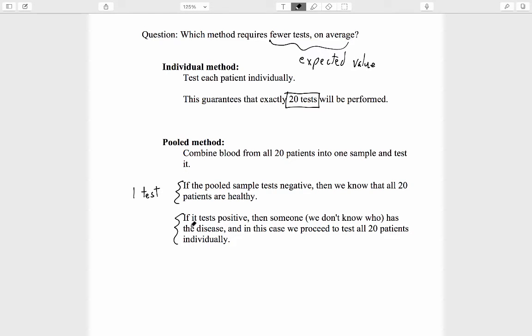However, in the other case, that the pooled sample test is positive, then we have to do these follow-up tests. And in that case, it's not 20 tests, but 21 tests overall that need to be performed. Because you have that initial test on the pooled sample followed by the 20 individualized tests.